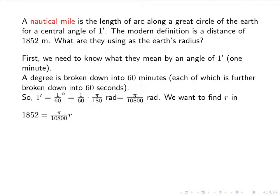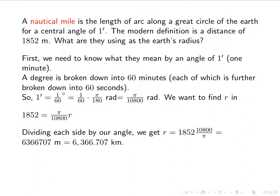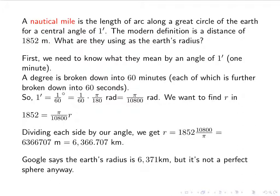When I plug it in, I have s equals θr. I know s, and I know θ, and I'm looking for r. To find r, I'm going to multiply both sides by the reciprocal of our fraction. So r is 1852 times 10,800 over π. I get a very large number in meters, so I'm going to change it to kilometers. I get 6,366.707 kilometers. If you Google what the Earth's radius is, you get 6,371 kilometers, which is pretty close. It's also good to remember that the Earth is not a perfect sphere. It's an oblique spheroid, so the radius depends on what part of the Earth you're looking at.